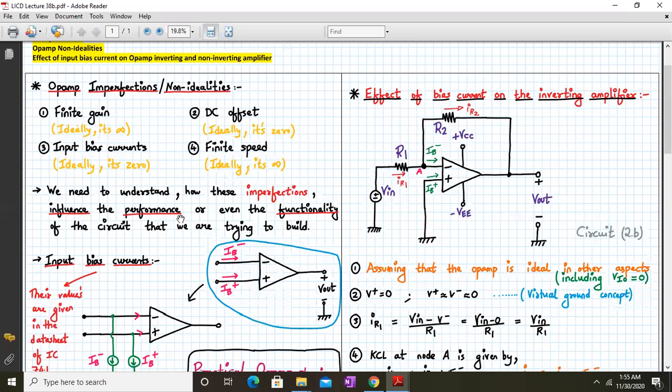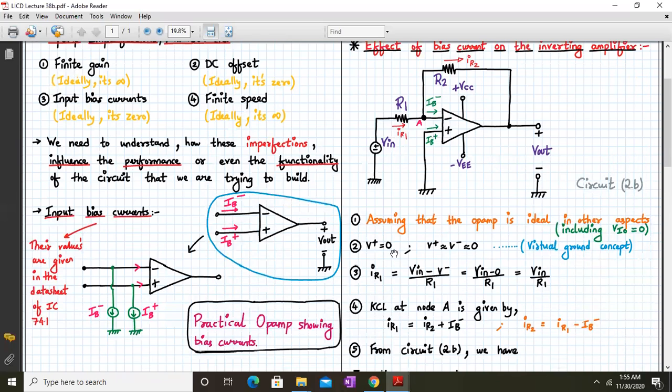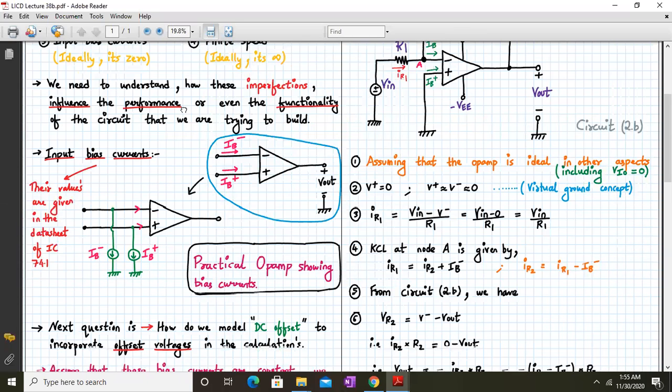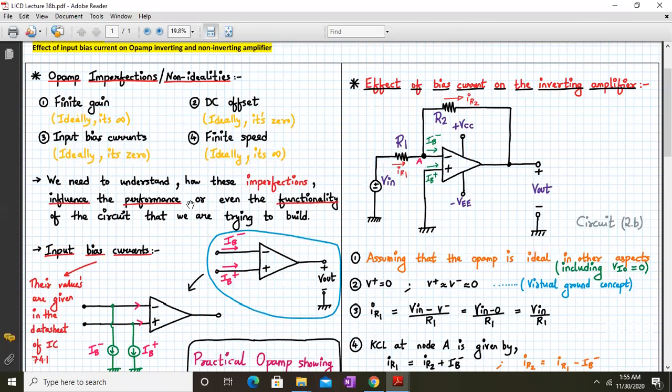So we have seen earlier the various op-amp non-idealities and out of them, one of them is input bias currents. So far in our entire analysis and dealings with the op-amp circuits, we have always conveniently assumed that Ib plus and Ib minus are always equal to 0 because of high input impedance. But we have really seen their values are not equal to 0. They have some finite value, and we need to understand how the input bias current will affect the op-amp performance.